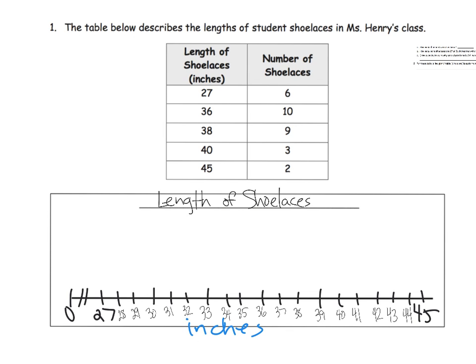There is our line plot. We're ready to start putting our line plots. We see that we have six people who voted for 27, so one, two, three, four, five, six. We see 10 people who voted for 36: one, two, three, four, five, six, seven, eight, nine, ten. We have nine people who voted for 38.